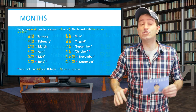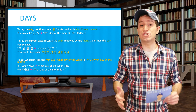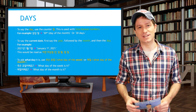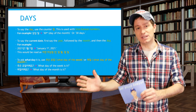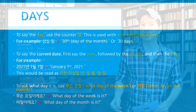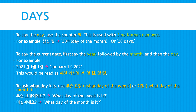To say the day or to count days, use the counter 일, together with Sino-Korean numbers. For example, 삼십 일 would be the 30th day of the month, or 30 days. To say the current date, first say the year, followed by the month, and then the day. For example: 이천 이십 일 년 일월 일일 would be January 1st, 2021.